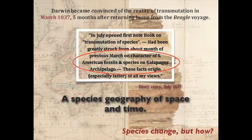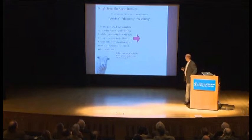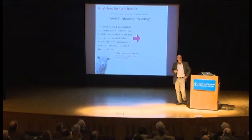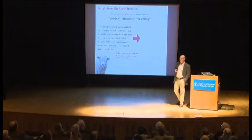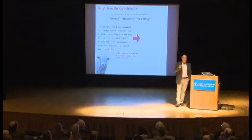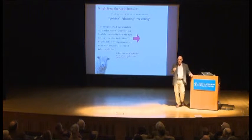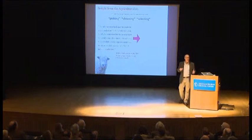Once you become convinced species change, that only begins to open up questions about how. Apparently Darwin intuitively had a sense that agricultural breeders were onto something. They're in the business of working with varieties and variations, and he poured over the agricultural breeding treatises of the day.